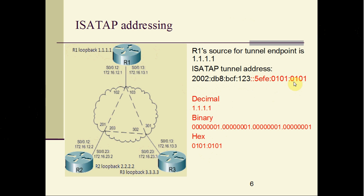How does ISATAP tunnel discover the tunnel endpoints dynamically? Once the tunnel is set up, routers 1, 2 and 3 will exchange routing updates. Router 2 sends a network update about an IPv6 network with its tunnel address as the next hop address for R1. By looking at the next hop address, router 1 will reverse-engineer the tunnel destination from the tunnel address.